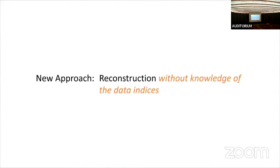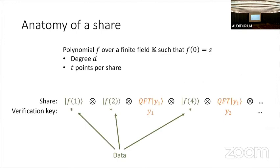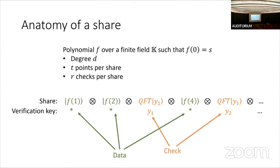Our key idea is to use an approach where we can reconstruct without knowledge of the data indices. Our approach is based on Shamir's polynomial secret sharing, which turns out to have very good error correction properties. We start off with a polynomial f where f(0) equals s, our secret, and each share contains some number t of evaluations of f.